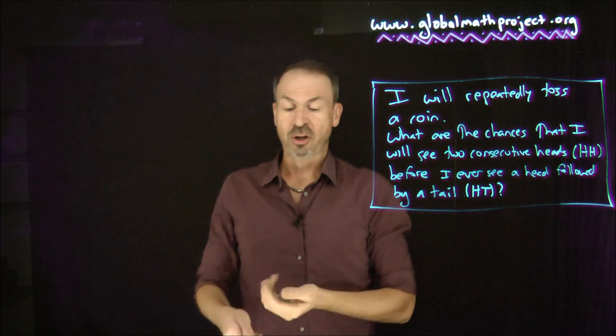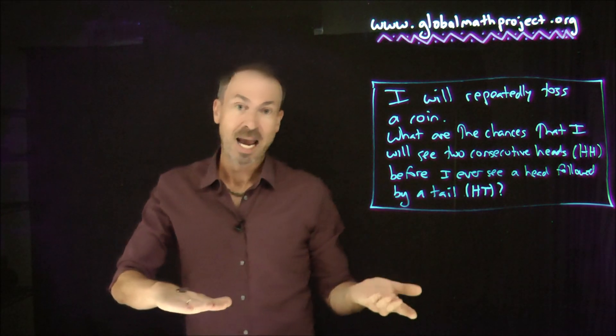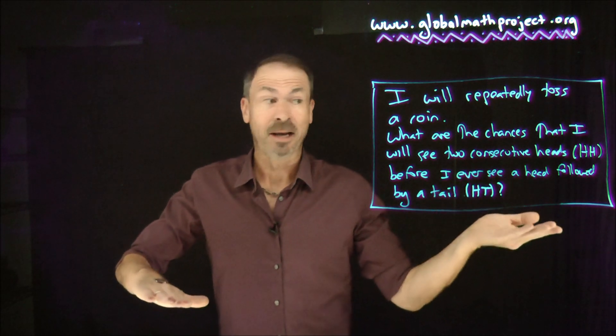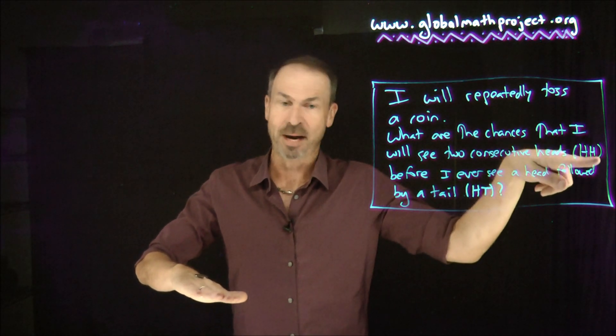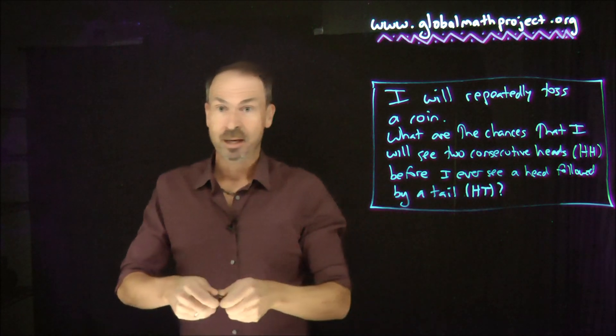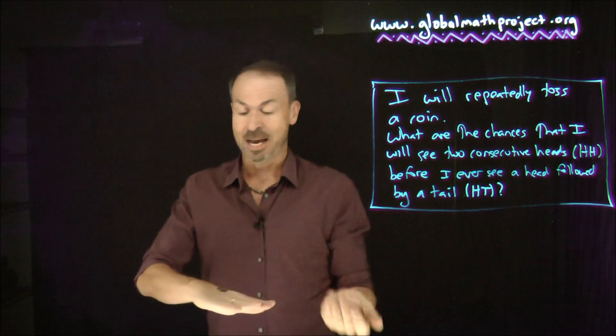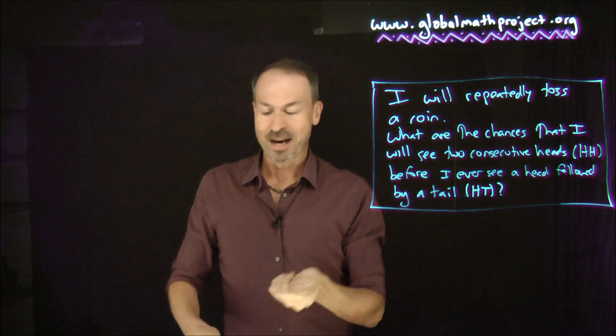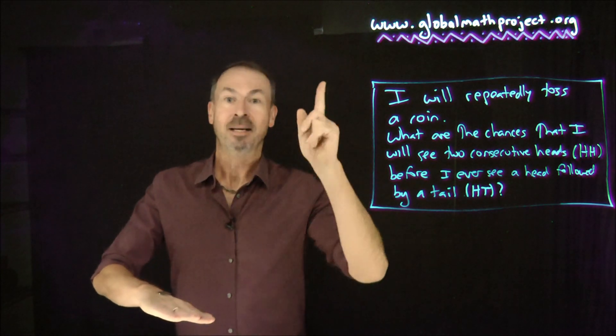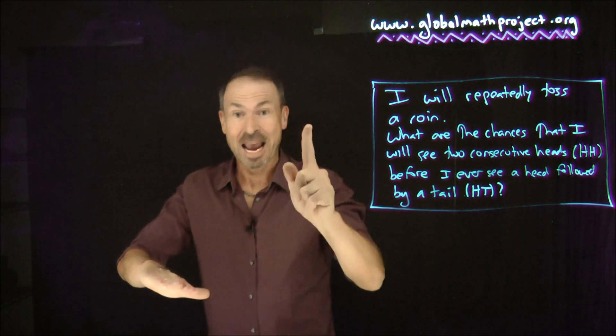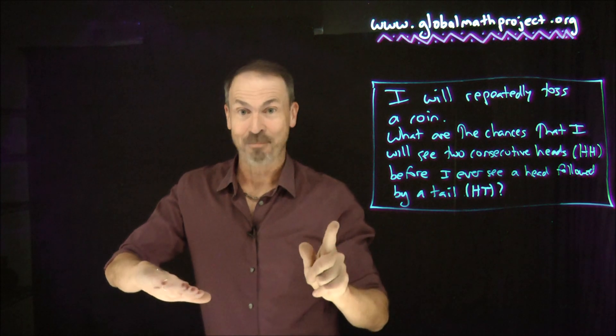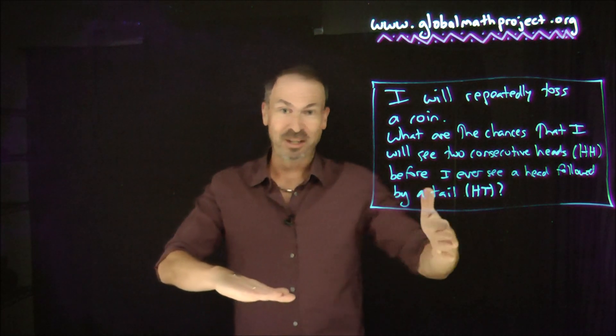First of all, imagine I do toss the coin and I get tails. That does nothing for me, because this experiment doesn't kick in until I get either a head followed by a head or a head followed by a tail. So getting a tail means I'm basically back to start. I get a tail again. In fact, now I've got a head. So as soon as I get my first head, the experiment has kicked in. It doesn't matter how many tails I do first.